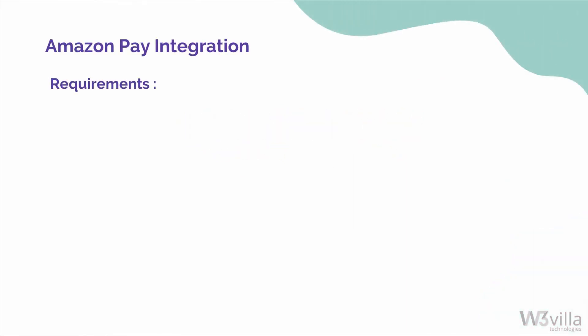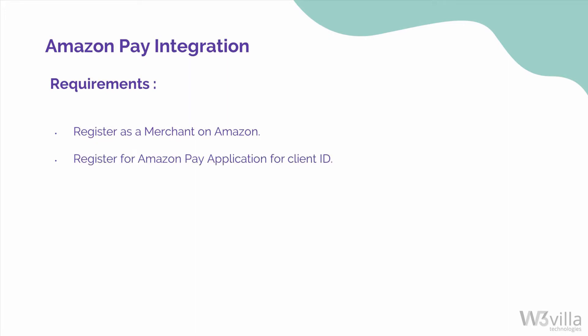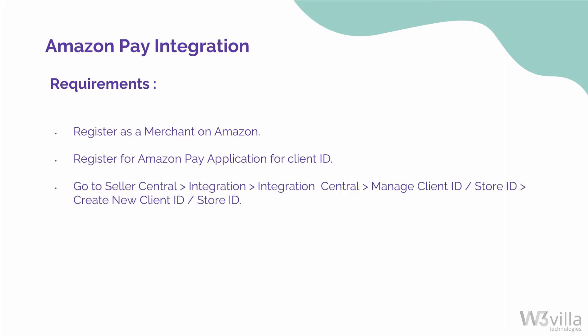To integrate Amazon Pay, you first need to register with Amazon as a merchant. Once you have registered as a merchant, you need to follow these steps. First, you need to register a new Amazon Pay application to obtain the necessary client ID. To do this, go to Seller Central and then select Integration, then Integration Central from the navigation bar on the top left side. Under the Manage Client ID / Store ID section, click on Create New Client ID / Store ID and enter information about your application.